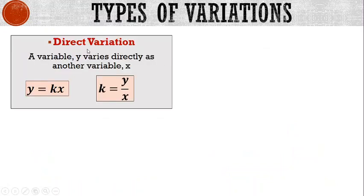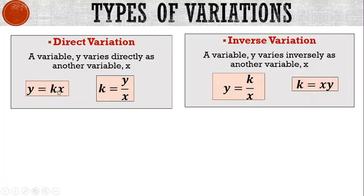The first type of variation is direct variation. When a variable y varies directly as another variable x, we write the equation of direct variation as y equals kx. For inverse variation, variable y varies inversely as another variable x. In this case, we write the equation as y equals k divided by x.